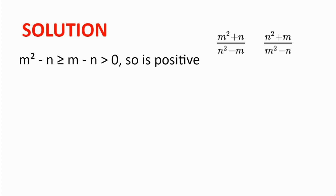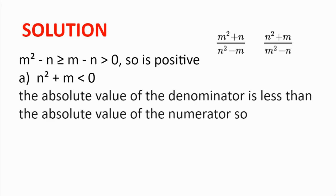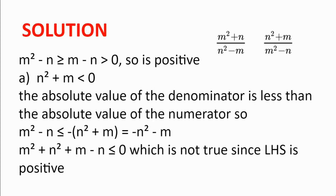We will now split the main case into three sub-cases: when n² + m is negative, equal to zero, and positive. First, when the numerator is negative: because the absolute value of the denominator is less than that of the numerator, and the denominator is positive, we get m² - n ≤ -(n² + m), which rearranges to m² + n² + m - n ≤ 0. But m² and n² are non-negative, and m - n is positive since m > n, so the left-hand side is positive. This is a contradiction, so there are no solutions in this case.